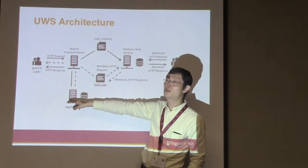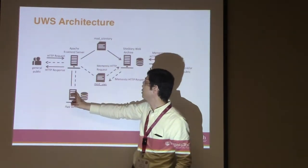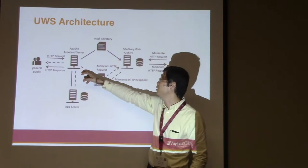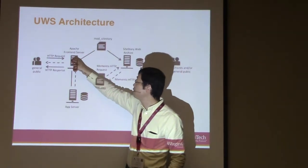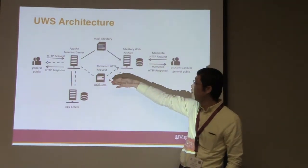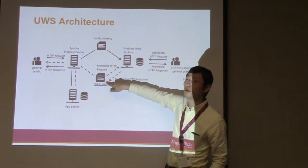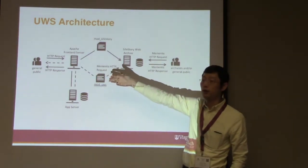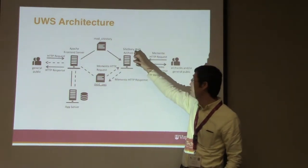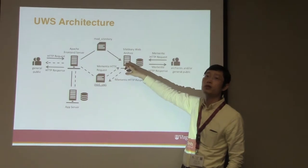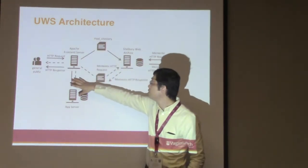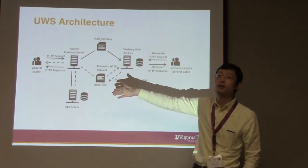Whenever you have an application server error — a 500 or 501 type response — normally that 500 error is sent back to the user, so you will see an ugly 500 page. We want to avoid this. We avoid this by using another Apache module. This module will intercept that 500 error, use the Memento protocol to send a request to the SiteStory archive, grab the most recent archived copy of the same page, and use that to serve the end user. That way, we hide the server error from the end user.